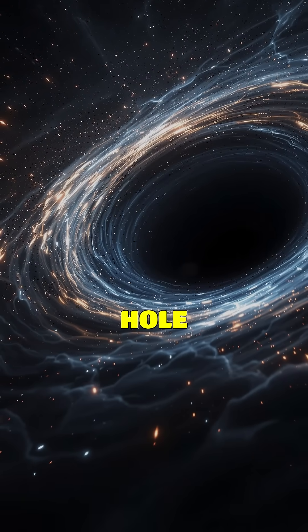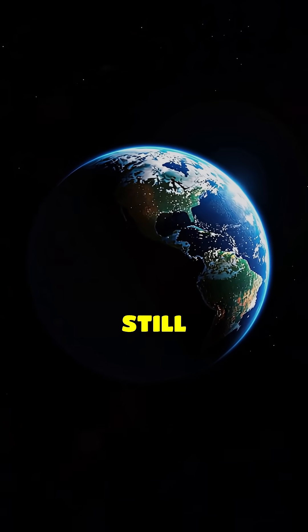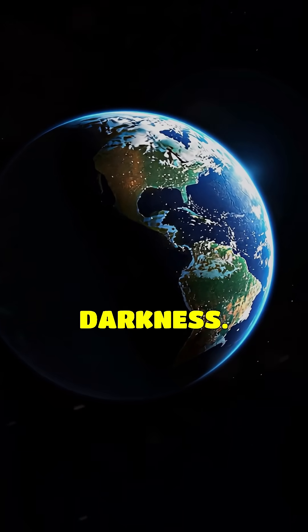If the sun became a black hole of the same mass, Earth would still orbit like normal, just in darkness.